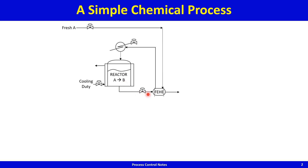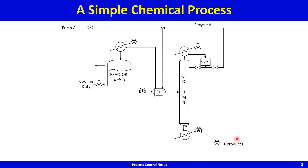This hot reactor effluent loses heat to the cold feed in the feed-effluent heat exchanger, and the cooled reactor effluent is then sent to a distillation column. Assuming that B is heavier than A, heavy B leaves down the bottoms, and nearly pure A leaves at the top. This nearly pure A is recycled back to the reactor along with the fresh feed.